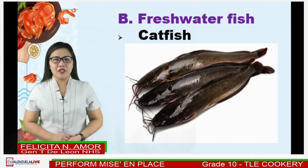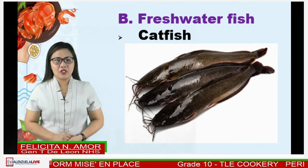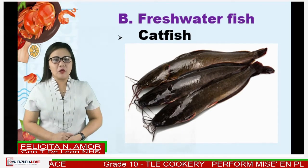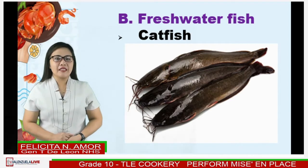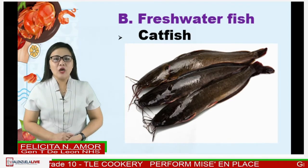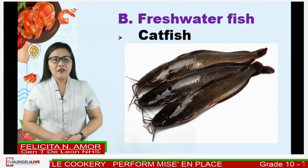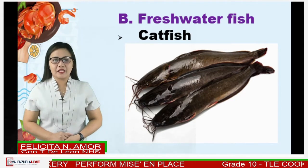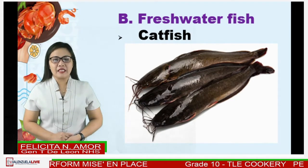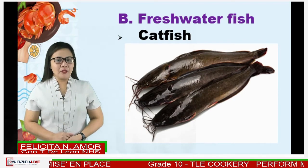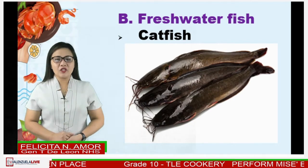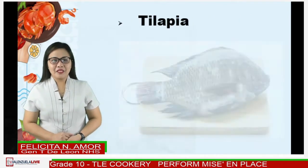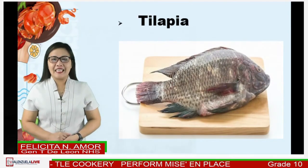Another kind of fin fish is freshwater fish. Freshwater fish are those that spend some or all of their lives in fresh water, such as rivers and lakes, with a salinity of less than 1.05%. These environments differ from marine conditions in many ways, the most obvious being the difference in levels of salinity. Examples are catfish, or hito in Filipino, eel, and tilapia.